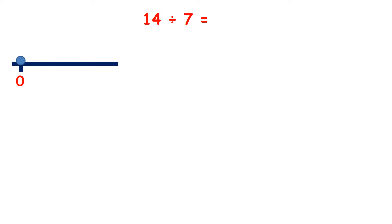Now we have 14 divided by 7. So if we count up in 7s, we have 7, 14. So we've got 2 groups of 7. So that's our answer.